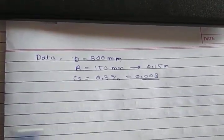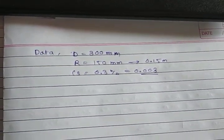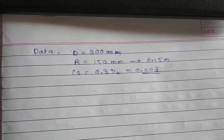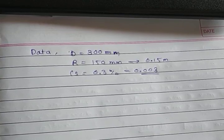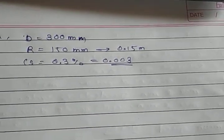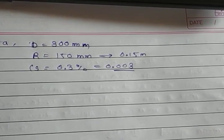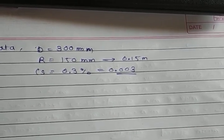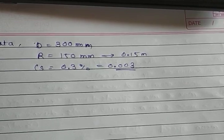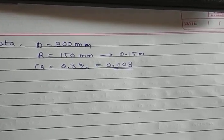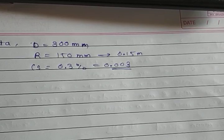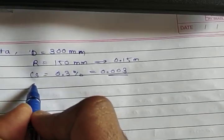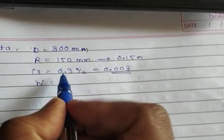Be careful about this conversion — a common mistake is writing 0.3 instead of 0.003. For example, if they give 3%, you take 0.03. Since Cs is 0.3%, we take 0.003. The speed N is 1800 rpm.